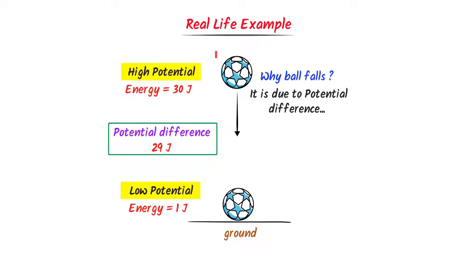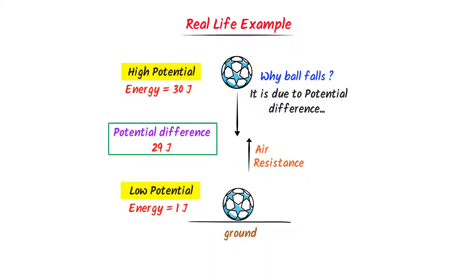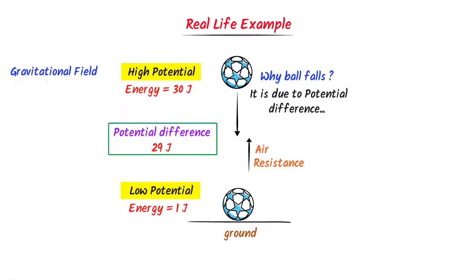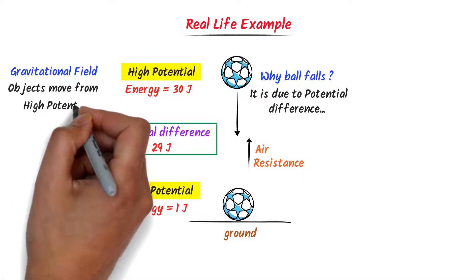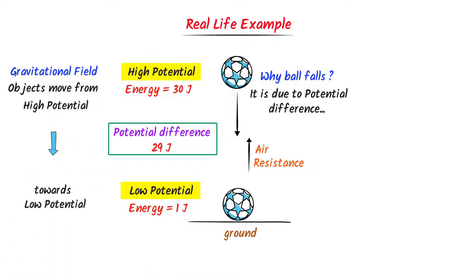Remember that when this ball moves from the high potential region to the low potential region, it experiences air resistance — air resists the motion of the ball in the opposite direction. Therefore, it is a universal fact that in a gravitational field, objects move from high potential region to low potential region in order to lower their energy.